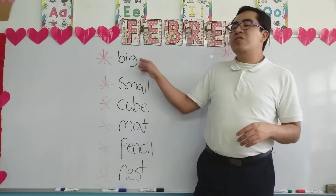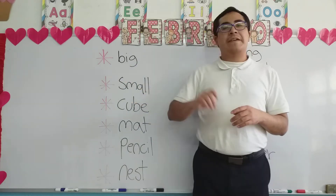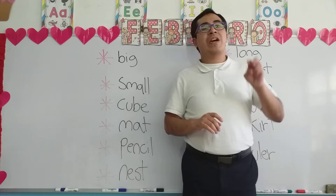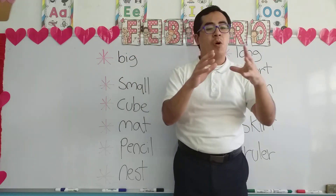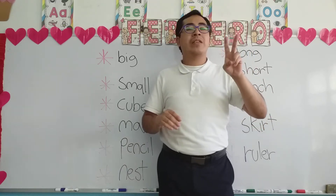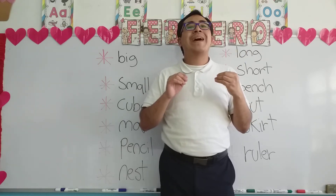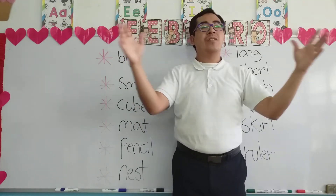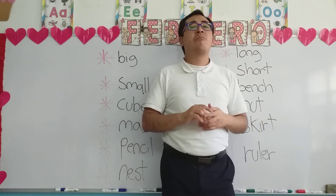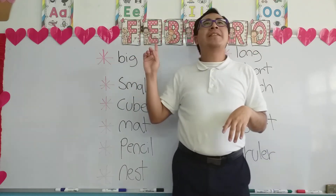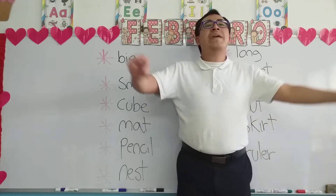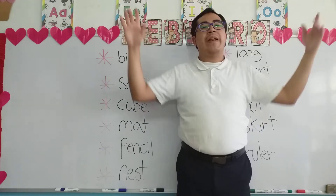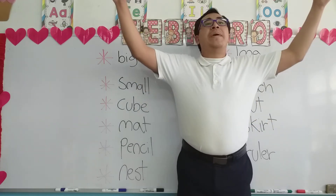Let's begin with the first word: 'big.' Remember, 'big' is an adjective and we use it to describe an object. We have two forms: big and small. Recuerden, chicos, que un adjetivo es una palabra que utilizamos para decir cómo es un objeto — para describir. Tenemos dos formas: grande — 'big' — and small — pequeño. Let's think of some objects that can be big. For example, an elephant is a big animal.